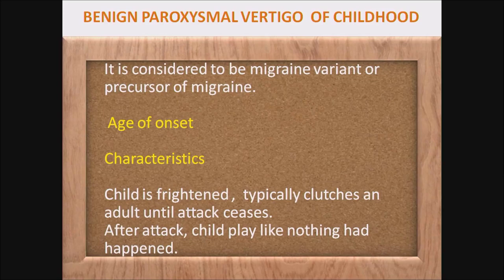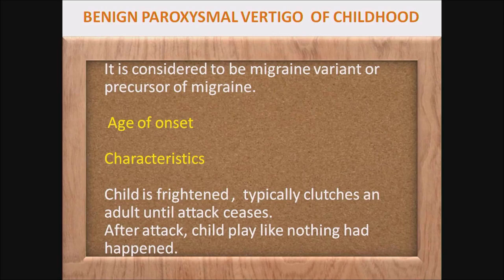Characteristics: sudden onset of vertigo, recurrent in nature, usually lasting for a few minutes, self-limiting. It is always associated with sweating, but nausea, vomiting, and nystagmus are very rarely seen. The child is frightened and typically clutches an adult until the attack ceases. After the attack, the child plays like nothing had happened.